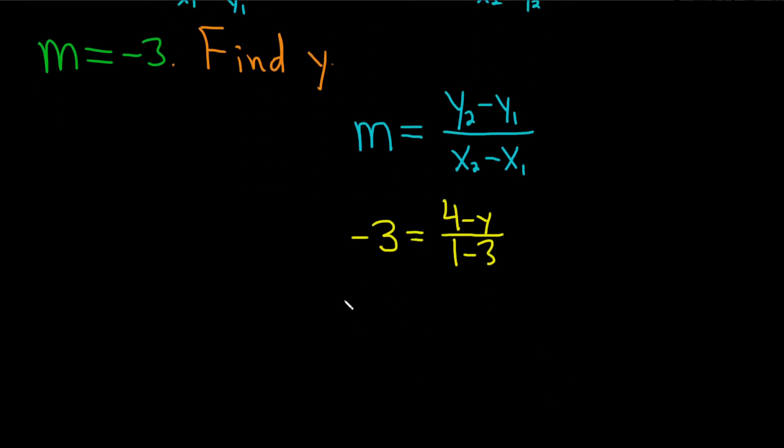Okay, so this is going to be negative 3 equals 4 minus y over, and then 1 minus 3 is negative 2. So now what we can do to get rid of this fraction is maybe we can multiply both sides by negative 2.